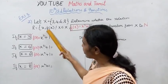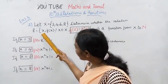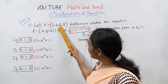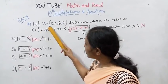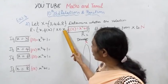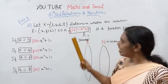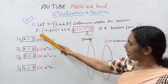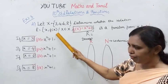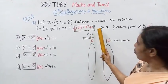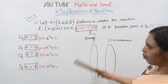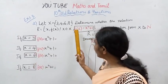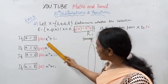The relation R = {(x, f(x))}, where x belongs to X. So small x = {3, 4, 6, 8} — this is the set X. Then f(x) = x² + 1 is the function. We will see that for x = 3, 4, 6, 8, applying the condition f(x) = x² + 1.